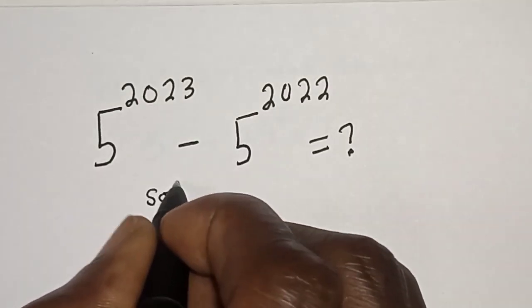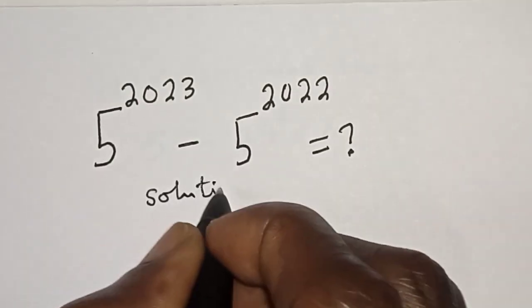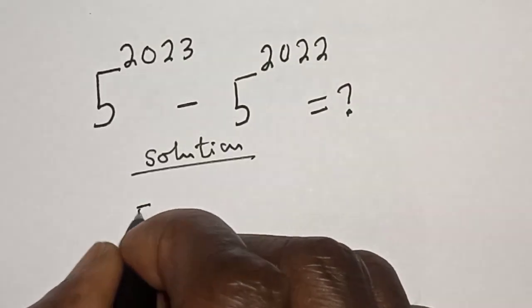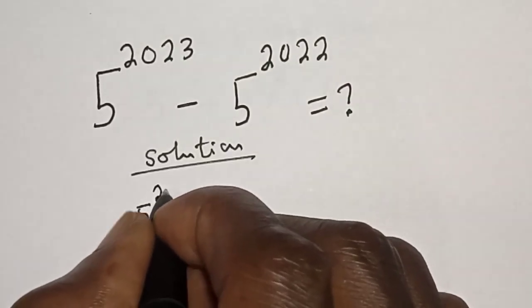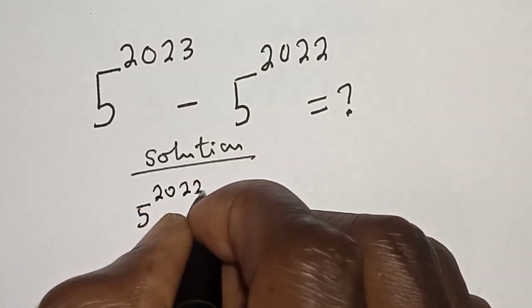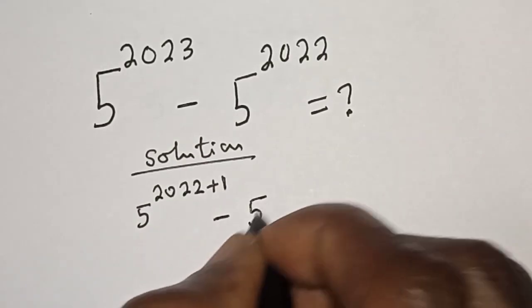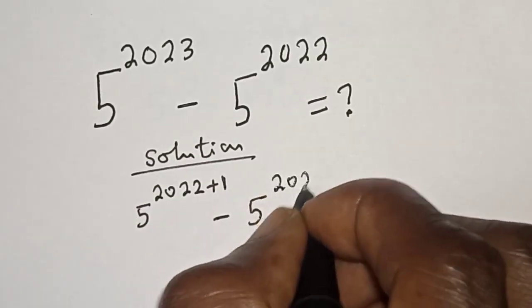Solution. 5 raised to power 2023 can be written as 5 raised to power 2022 plus 1 minus 5 raised to power 2022.